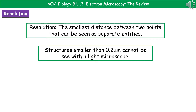Welcome to our review on electron microscopy. The first thing we need to consider is the meaning of a key word we're going to use when looking at a comparison between the light microscope and the electron microscope. That word is resolution. Quite simply, resolution is the smallest distance between two points that we can still see them as separate entities, so they're not blurred together.